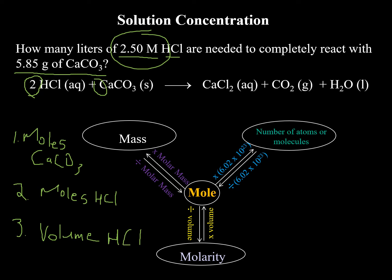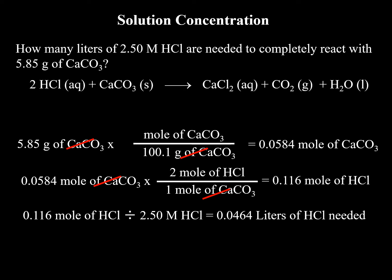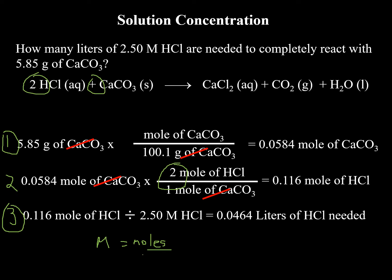Step one: find moles of CaCO₃ using the periodic table — divide by the molar mass. Step two: use the balanced chemical equation with a 2-to-1 ratio to find moles of HCl. Step three: divide the moles by the molarity. Remember, M equals moles divided by liters, so dividing moles by molarity gives you the volume.